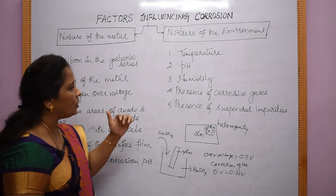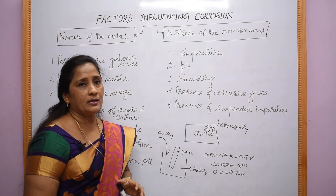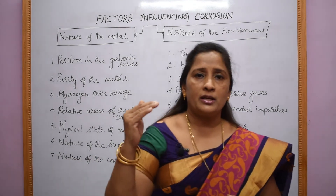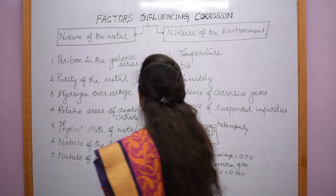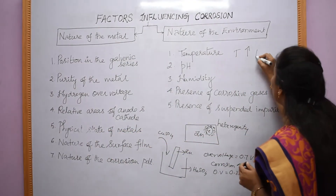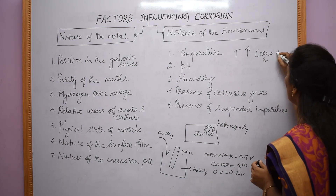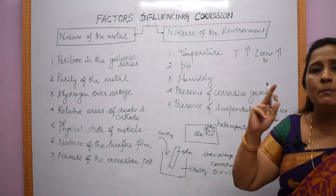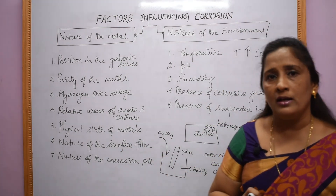Coming to the nature of the environment, the first factor is temperature. When the temperature increases, the rate of corrosion also increases. This is because at higher temperature there is more diffusion of ions, therefore the corrosion rate increases.